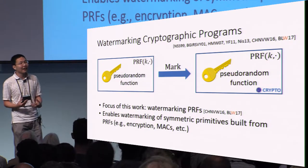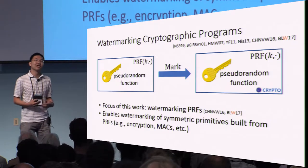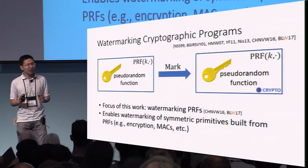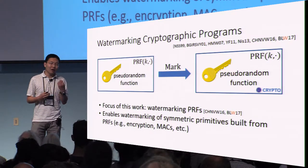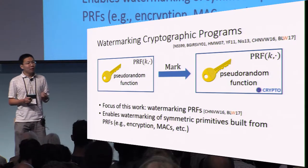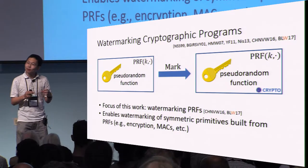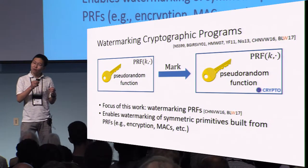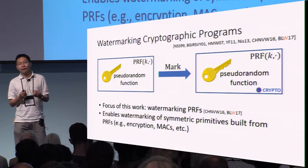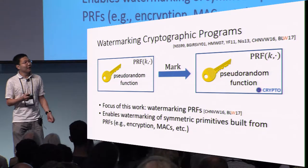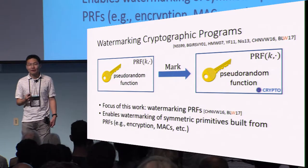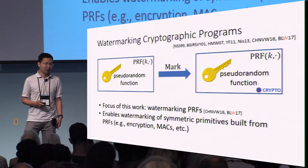Just to make sure the model is clear: when I say we watermark a pseudo-random function, I mean we have a program with a PRF key hardwired inside it, and all the program does is implement the PRF evaluation on input x. Our objective is to watermark this kind of program.